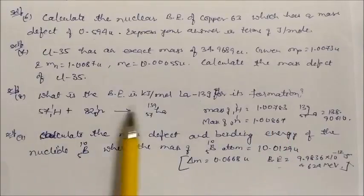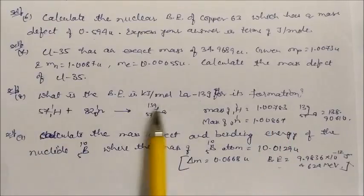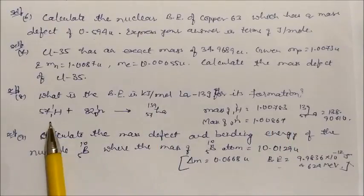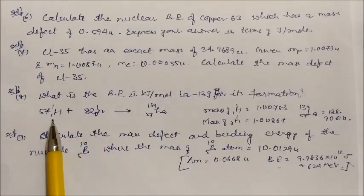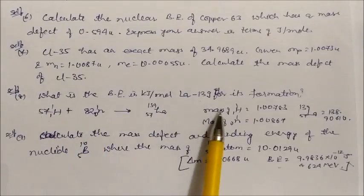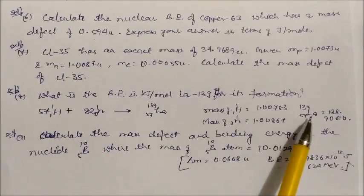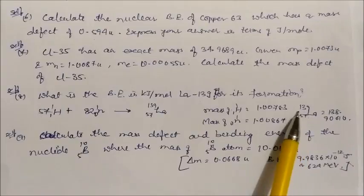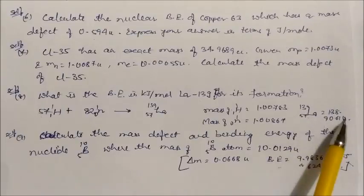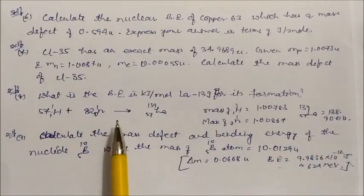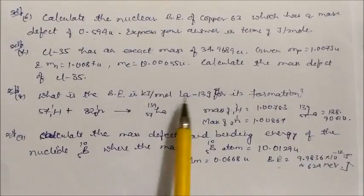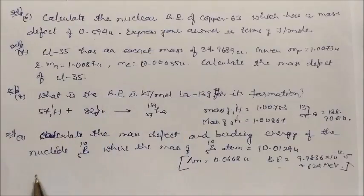For lanthanum-139, the question asks for the binding energy in kJ/mol for its formation. The reaction means lanthanum-139 is formed from protons with 82 neutrons bombarding them. Mass of proton, mass of neutron, and mass of lanthanum-139 are given. We can calculate using the previous methods.